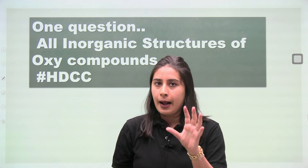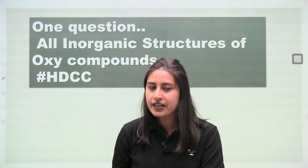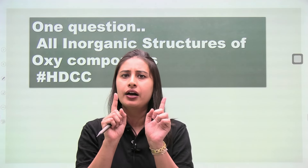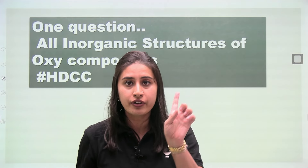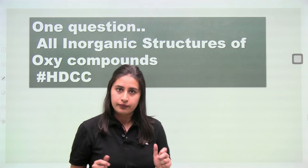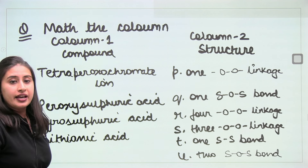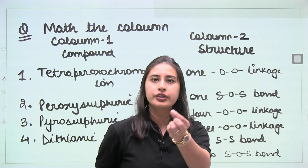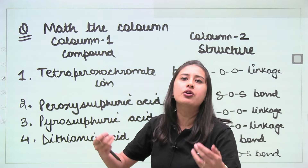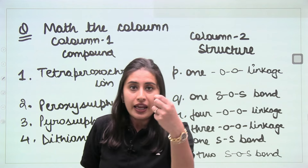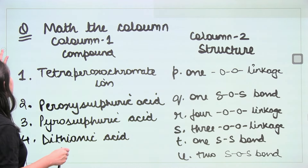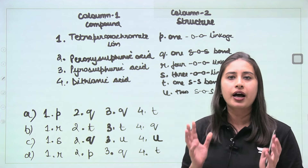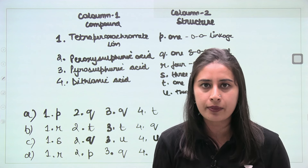The question is a match-the-column format. I will show you the question and options. Sometimes in match-the-column, the answer is hidden in the options — if there's a unique option, you can pick it and get your answer. Pause the video now and try the question yourself.